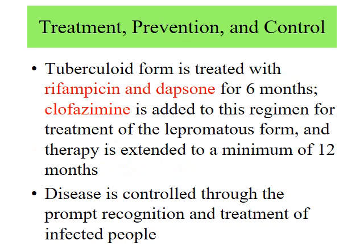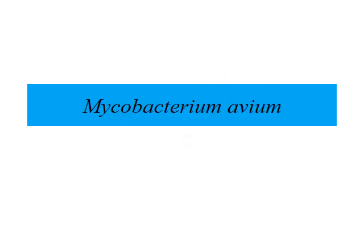For treatment, rifampicin and dapsone are used for six months for tuberculoid leprosy. For lepromatous leprosy, clofazimine is added and treatment may be extended to 12 months. The most important message is to promptly recognize and initiate treatment before progression from tuberculoid to lepromatous leprosy.